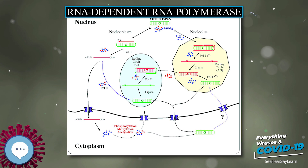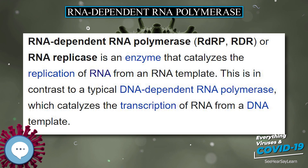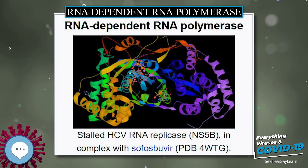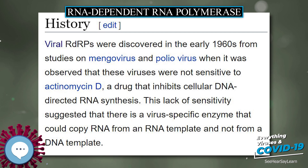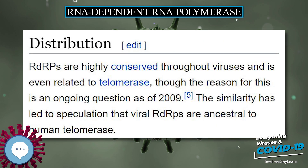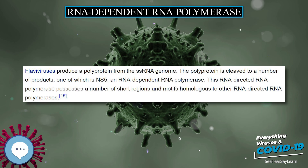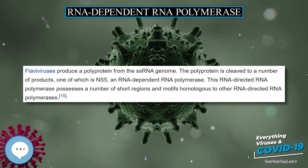The best-known RDRPs are polioviral 3D-pol, vesicular stomatitis virus L, and hepatitis C virus NS5B protein. Many eukaryotes also have RDRPs involved in RNA interference; these amplify microRNAs and small temporal RNAs, and produce double-stranded RNA using small interfering RNAs as primers. In fact, these same RDRPs used in defense mechanisms can be usurped by RNA viruses for their own benefit. Their evolutionary history has been reviewed.